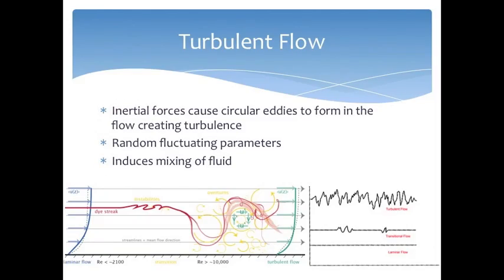Turbulent flow has large fluctuations in velocity and the dominating inertial forces cause swirling, unsteady, circular eddies to form within the flow. The swirling fluid causes turbulence and induces mixing within the fluid. Turbulent flow is unpredictable and makes analyzing fluid characteristics much more complicated.